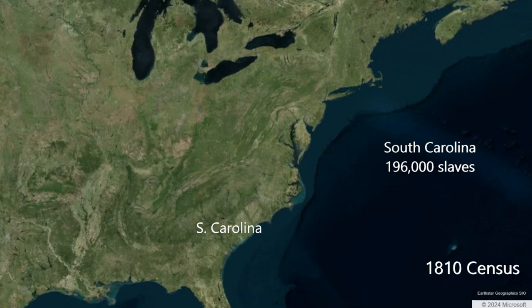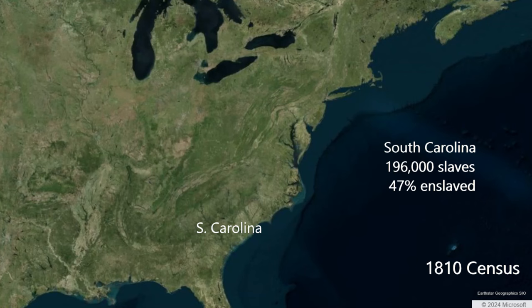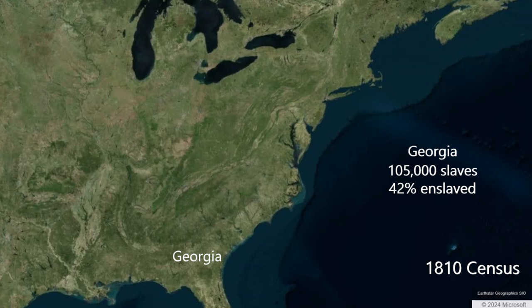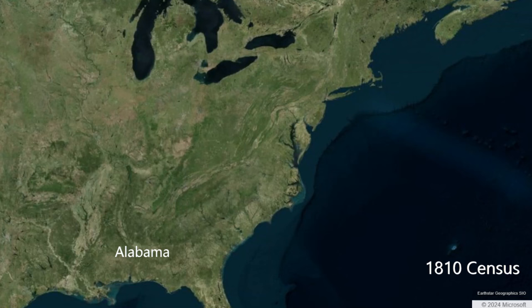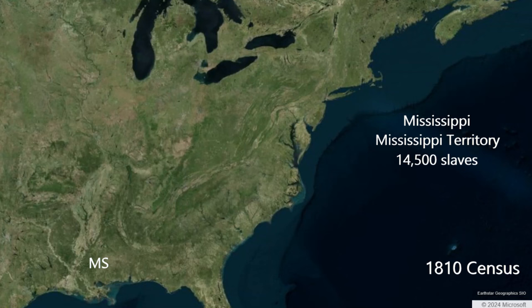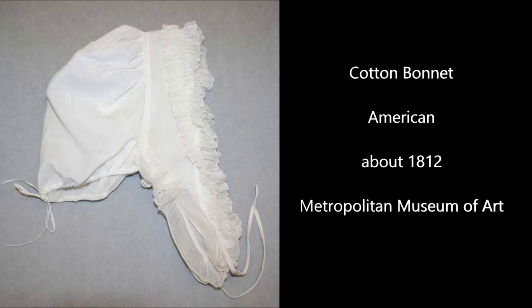South Carolina had 196,000 slaves in 1810, about 47% of the state. South Carolina is emerging in the Cotton Age as a state with the highest percentage of slaves. Interestingly, in a state where nearly half the population is enslaved, there are also some 4,500 free African Americans in South Carolina. Georgia had 105,000 slaves in 1810, about 42% of its population. In the future state of Alabama in the Mississippi Territory, there were some 2,600 slaves, or 29% of the population. In the future state of Mississippi, there were some 14,500 slaves, or about 46% of its population. The growth of slavery in the Mississippi Territory is exponential, a result of the expansion of cotton plantations.